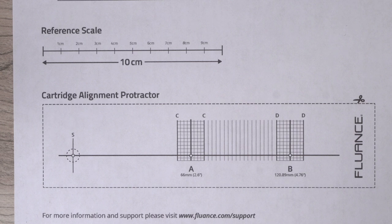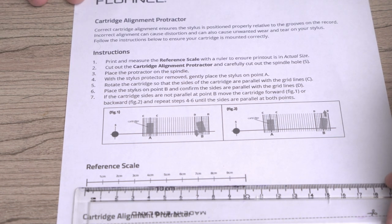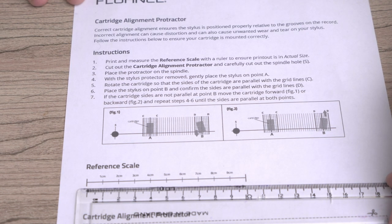After printing the protractor, be sure to measure the reference scale. Checking the alignment depends on these measurements being exact, and accidentally printing the page slightly bigger or smaller will give you inaccurate results.